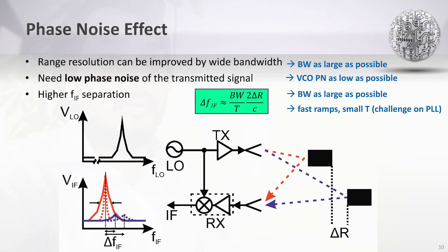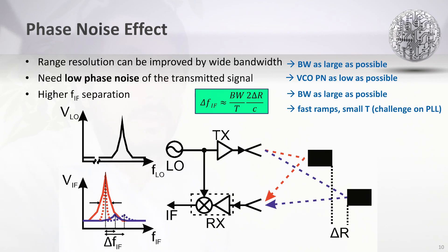Phase noise is one of the crucial parameters of the transceiver, depending on the sensing range and because of the phase noise correlation in the near field. Degraded phase noise can result in a scenario where the reflection from a smaller or more distant target is covered by the noisy reflected signal from a larger target. One can try to separate the targets by having a higher IF separation, which can be achieved by faster frequency ramps. At the same time, the bandwidth must be as large as possible for good range resolution, but this poses very challenging requirements on the PLL to generate fast ramps over a wide frequency range while having a low phase noise VCO.